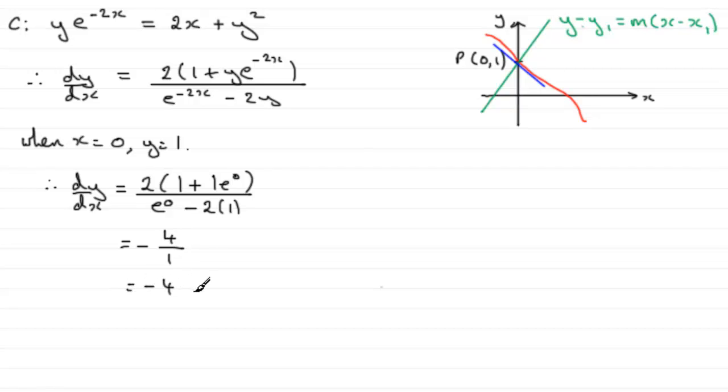So now we have the gradient of the tangent. So we now know that therefore the gradient of the normal must be plus 1 quarter, because the product of the gradients must equal minus 1. So therefore the gradient of the normal must equal 1 quarter.